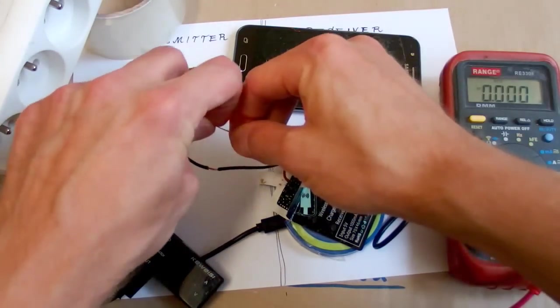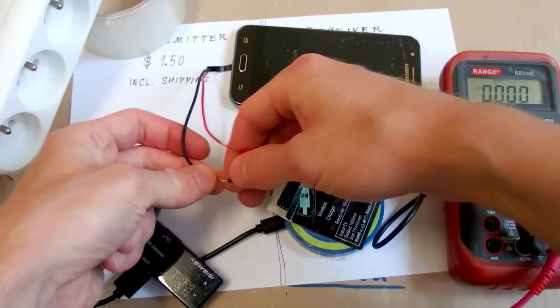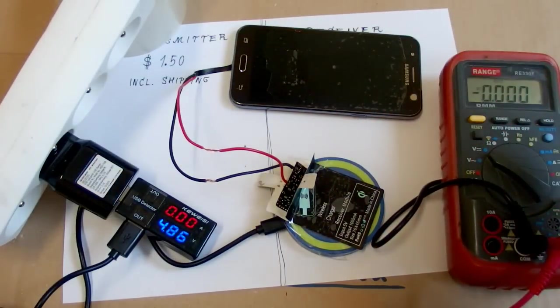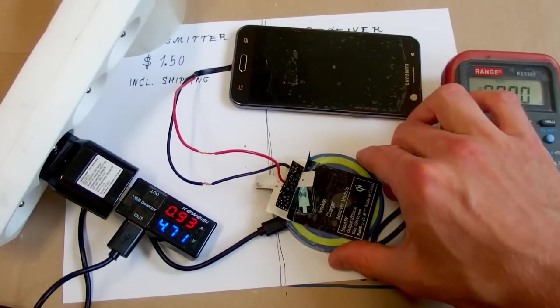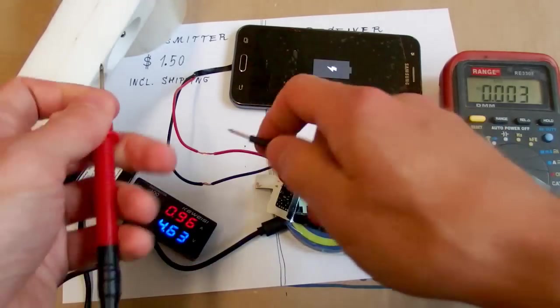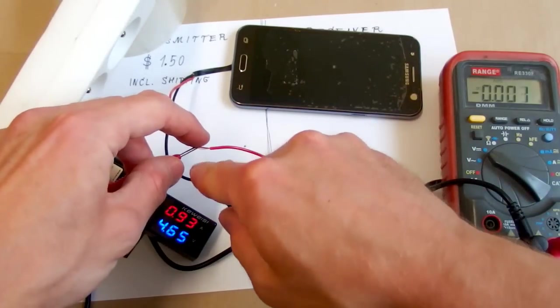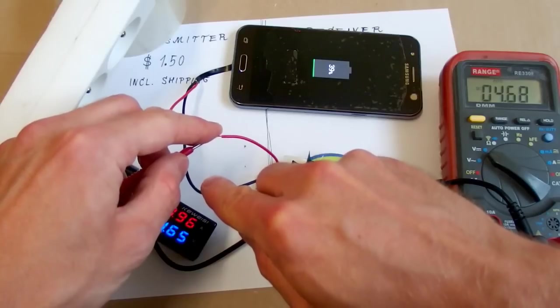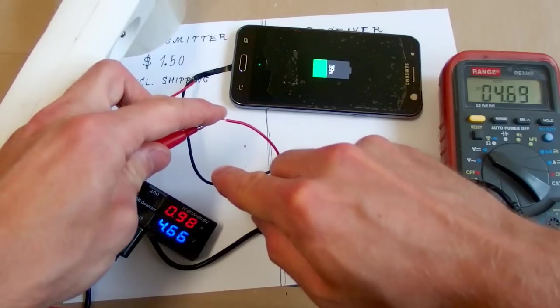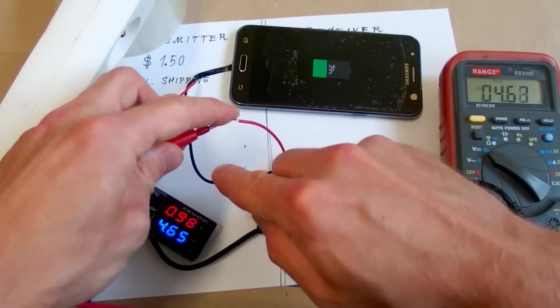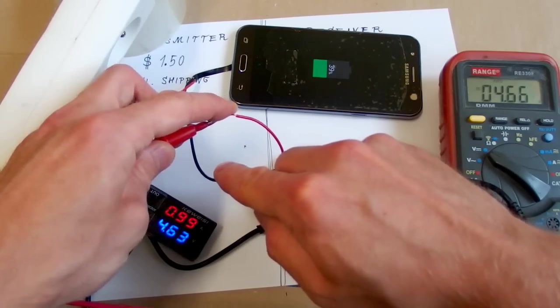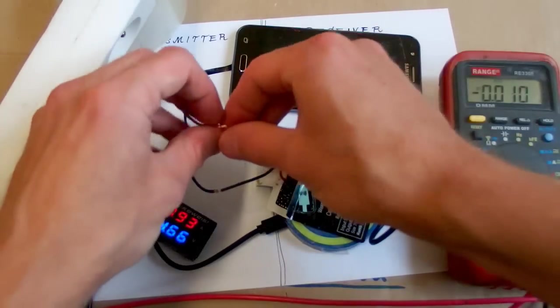So I've put some longer wires on it to be able to make some measurements. Let's plug it in. Now it draws about one amp and it's charging. Now the output voltage is about 4.68 volts. So the voltage at the input and at the output is almost the same. And the current is one amp. And let's measure the output current.